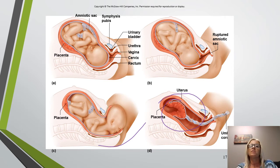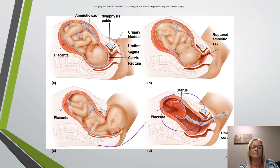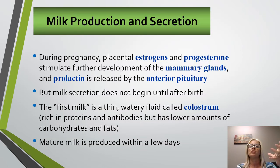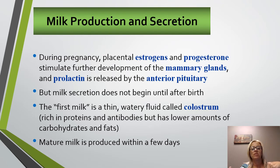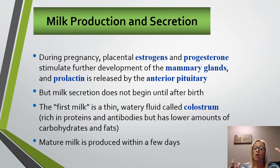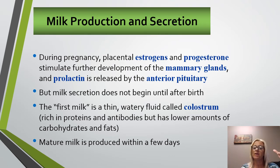As nursing continues, oxytocin is released, which helps the uterus shrink back to its normal size. In the day or two before milk secretion begins, the breasts secrete colostrum. Colostrum is very important — it's the first milk, a watery fluid rich in protein and antibodies, with lower amounts of carbohydrates and fats. It helps the infant release the meconium, which is the first bowel movement, very atypical of a normal bowel movement. Colostrum is very important and will help protect your baby.